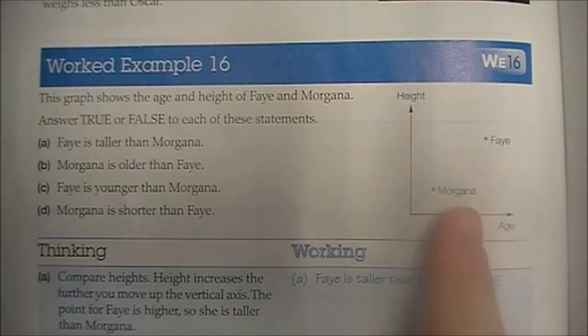Before we look at that, we'll have a look at the graph just over the side here. We have age along the x-axis, so the further along we are, the higher the age. So we can instantly see that Faye is further along the axis than Morgana, so Faye is the older one.